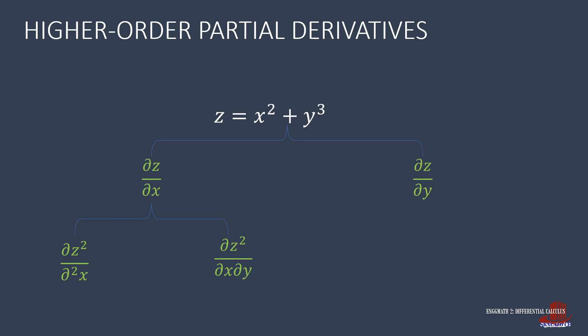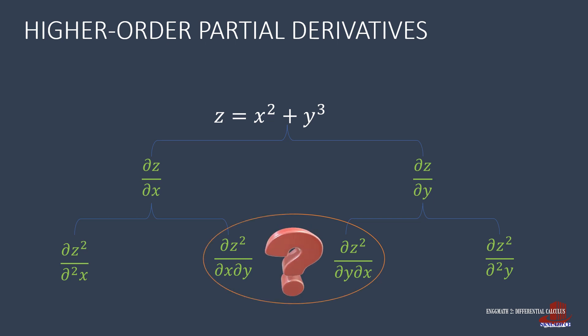The other first-order derivative, the partial derivative of z with respect to y, generates the second-order derivatives: the second partial derivative of z with respect to y, and also the second partial derivative of z with respect to y and x. Taking a closer look at this pair of partial derivatives, it is notable that they are the same, though their orders are flipped. The question is: are these partial derivatives truly the same or not?